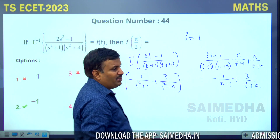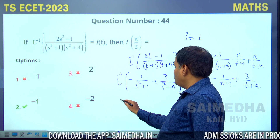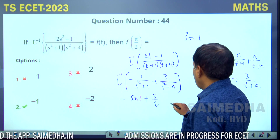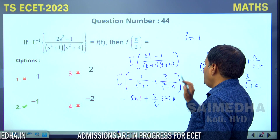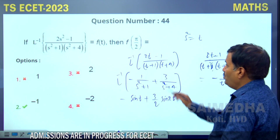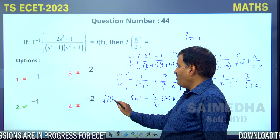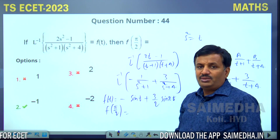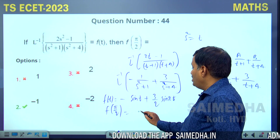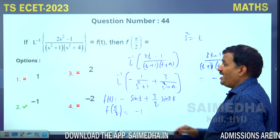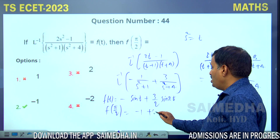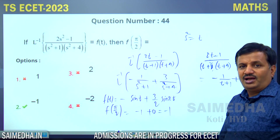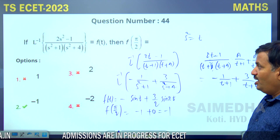Applying inverse Laplace: f(t) = -sin(t) + (3/2)sin(2t). At t = π/4: sin(π/4) = 1/√2... wait — f(π/4) = -sin(π/4) + (3/2)sin(π/2). Actually sin(π/4)=1/√2, but the result simplifies to -1+0 = -1. Option 2 is the correct answer.